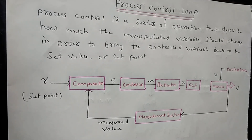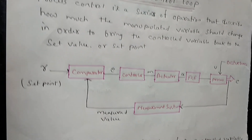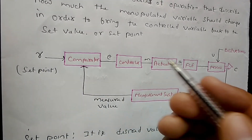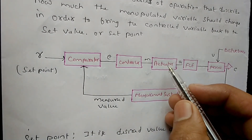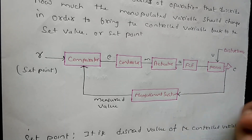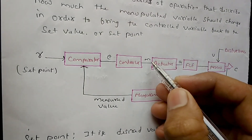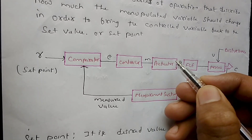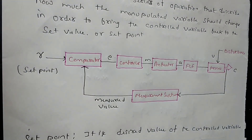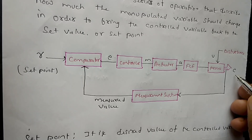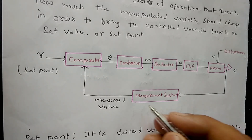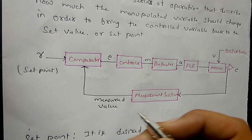This is the process control loop. This is the set point, this is the comparator, this is the controller, this is the actuator, this is the final control element, this is the error, this is the manipulating signal, this is the actuating signal, this is the process, this is the disturbance, this is the control variable like pressure, flow, and level, and this is the measurement system with the measured value.